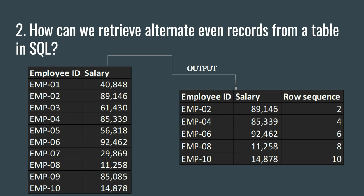You have a table in front of you — for example, an employee table containing employee ID and salary. The question is that you have to get the alternate rows, and those alternate records should be at an even row number. So from top to bottom: employee 1 is row 1, employee 2 is row 2, and so on. You have to get employees at even row numbers — employee 2, 4, 6, 8, and 10.